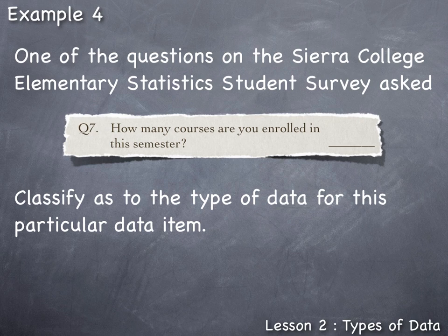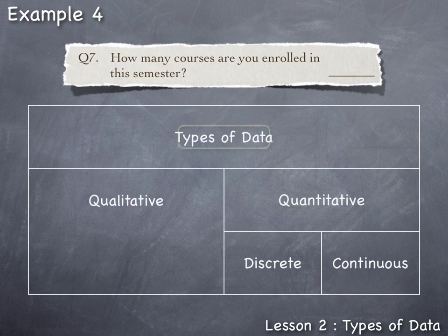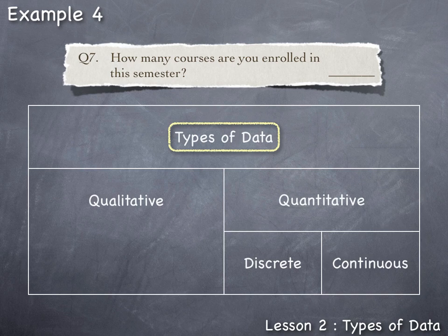To classify this data by type we need to determine if the number of courses a student is enrolled in is either qualitative or quantitative. Well, the number of courses a student is enrolled in is a count, the number of classes, hence it's quantitative or numerical in nature.